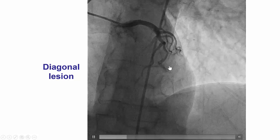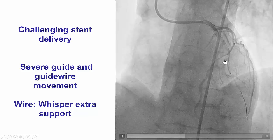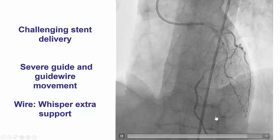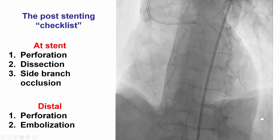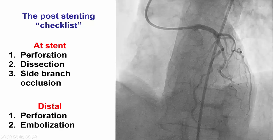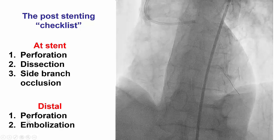This is the first case — a patient who had a significant diagonal lesion. The stent delivered to the lesion was challenging and involved severe guide and guidewire movement. The wire used was an extra support whisper wire. It is important to look at the wire movement; it is further down the vessel and with every beat seems to be coiling. The stent was placed, and after placement there are five things we should always check for, both at the site of the stent as well as distally.